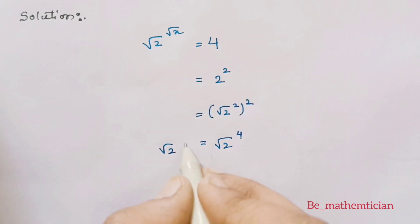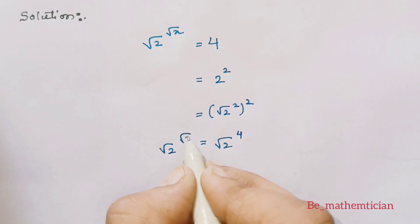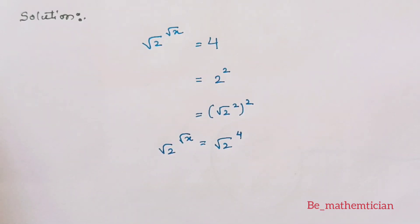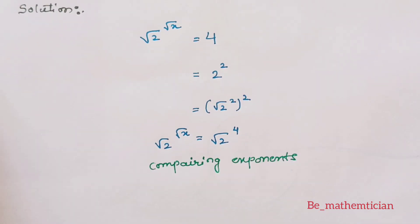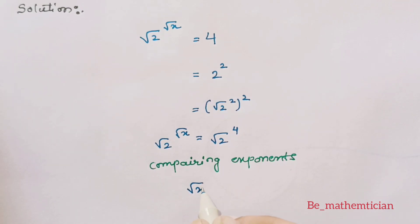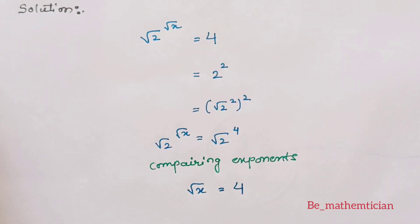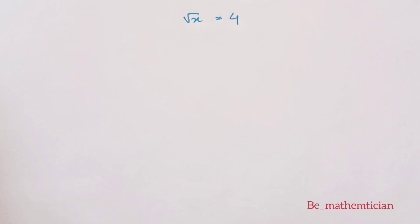On the LHS we have root 2 raised to root x. Now we can see the bases on both sides are equal, so we can compare the exponents. We get root x is equal to 4.